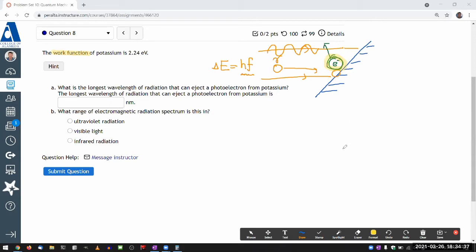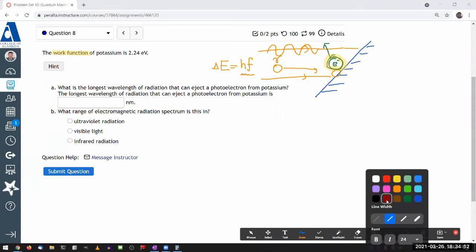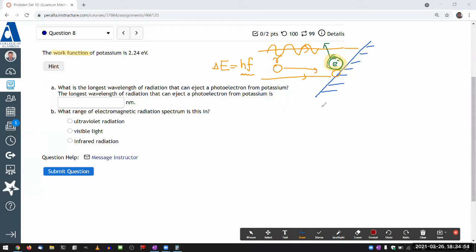So with that revision of the physical picture, you can write down a really simple expression that really only relies on the idea of conservation of energy. So from conservation of energy, you can say this, you can say that energy in, that's the energy coming from the photon, Planck's constant times frequency, is equal to energy out.